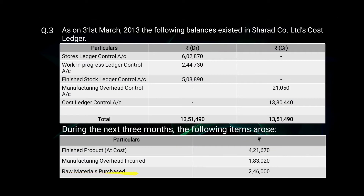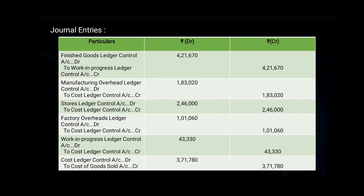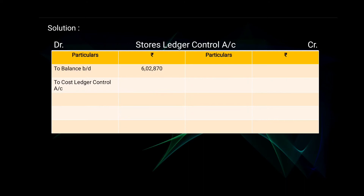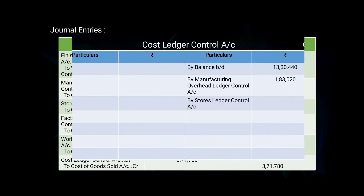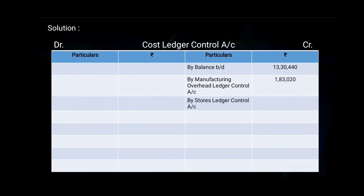Next, raw materials purchased — 2 lakh 46,000. The first effect is given in Stores Ledger Control Account as 'to Cost Ledger Control Account — 2 lakh 46,000.' The second effect is given in Cost Ledger Control Account as 'by Stores Ledger Control Account — 2 lakh 46,000.'